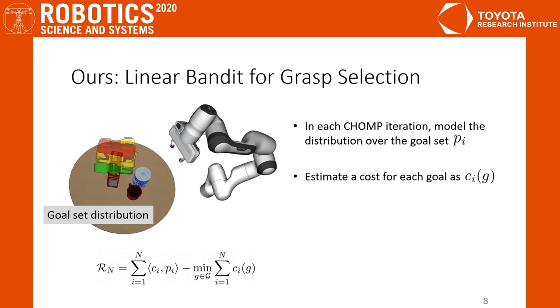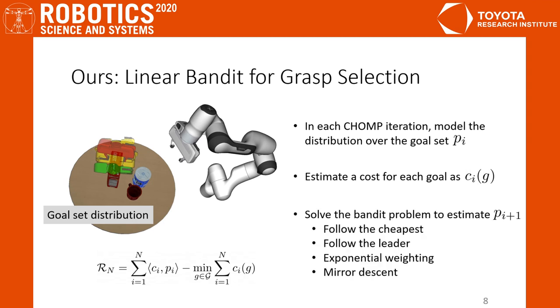The bandit cost c_i at each iteration is computed by simulating the trajectory execution and using interpolation to the goal set, which can be understood as an approximate cost to goal. Then we use online learning algorithms to update p_i. Finally, we choose argmax over p_i as the projected goal for the next iteration, i+1.